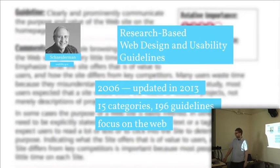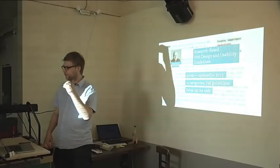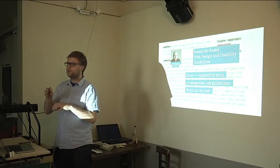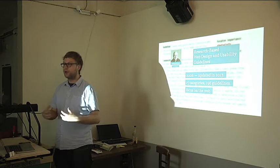And then there's also the research-based web design and usability guidelines. They are from HHS, which is an American organization. They have around 196 guidelines, but every guideline is scored on relative importance and also on a scientific background scoring. So it's really that every guideline is scored on those two things — really useful. It was updated last year. A useful source to gather information.